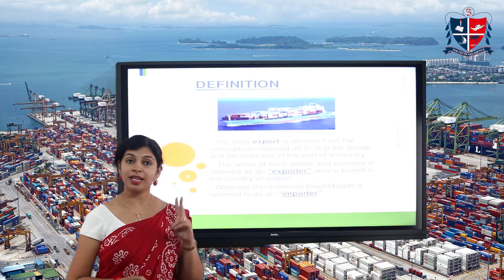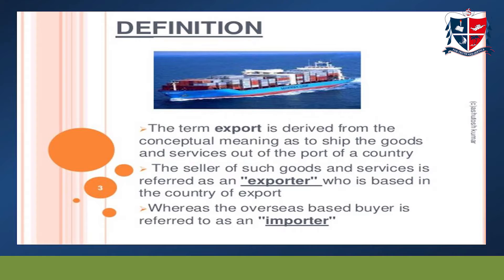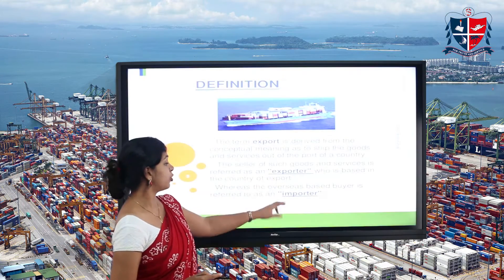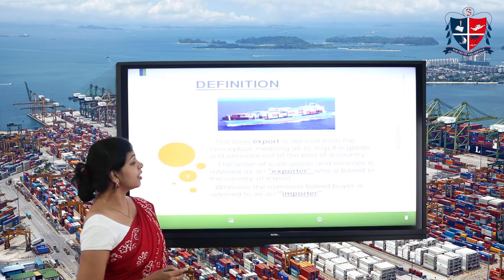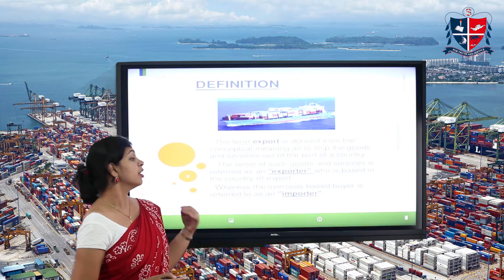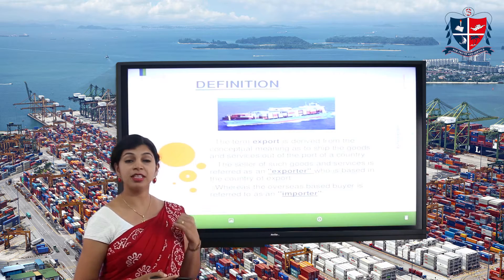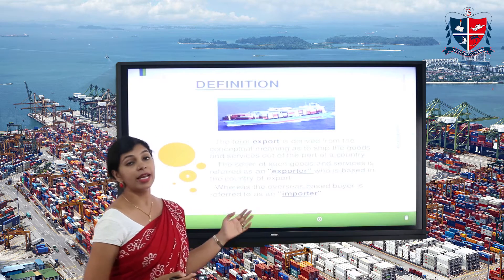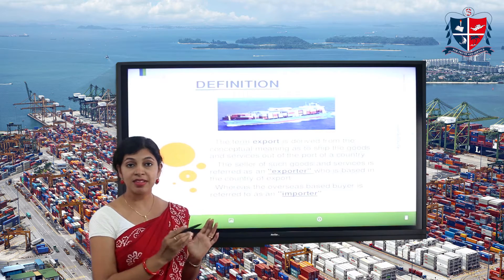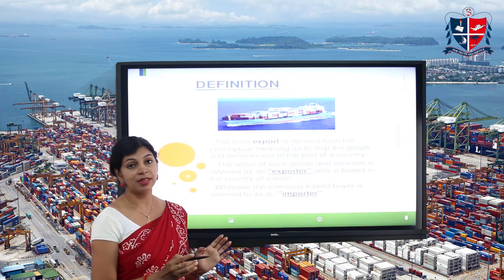In international trade, there are basically two people: the exporter and the importer. The person who sells products or provides services is called the exporter. The person who purchases those products — suppose from India — is called the importer. So the seller of goods and services is the exporter, whereas the overseas-based buyer who is purchasing the products from India is known as the importer. These two are the basic components of international trade.